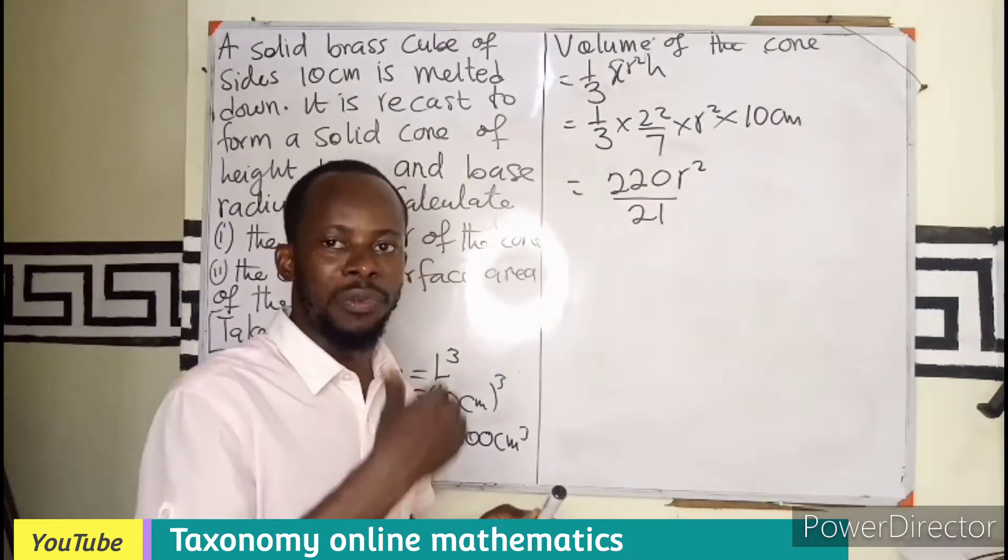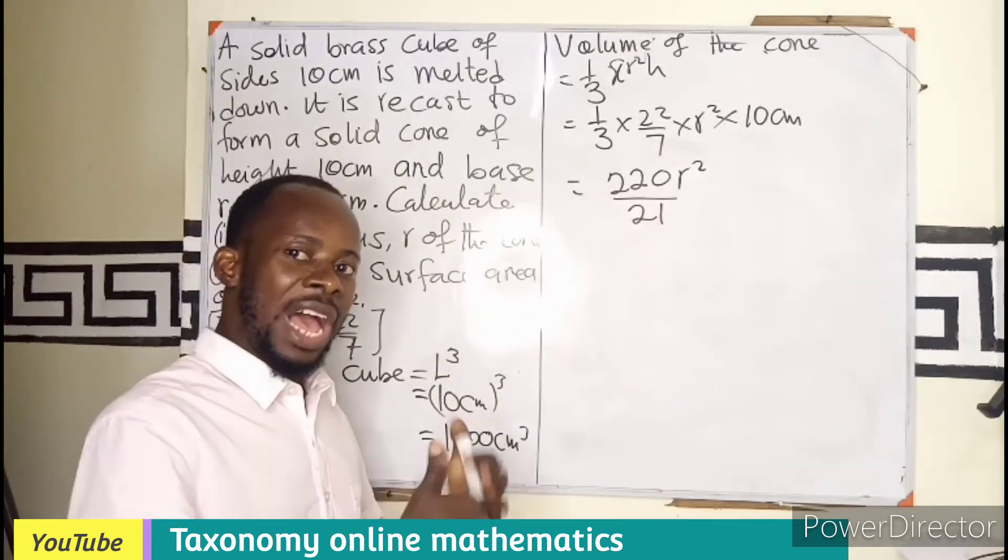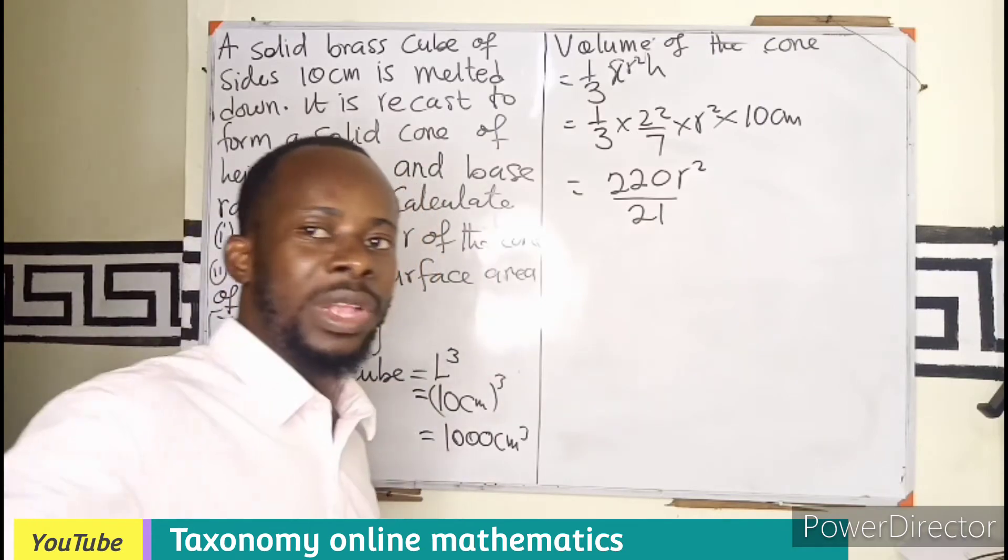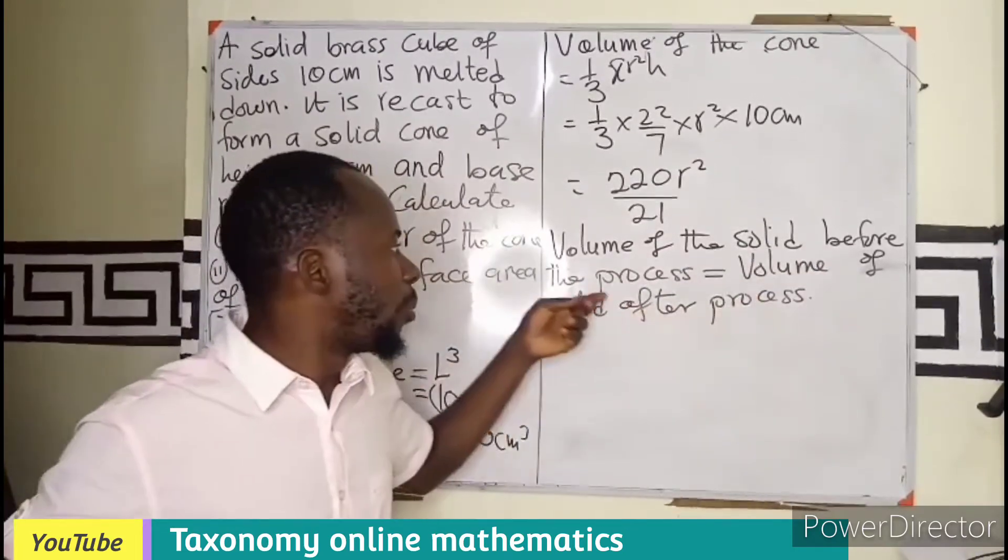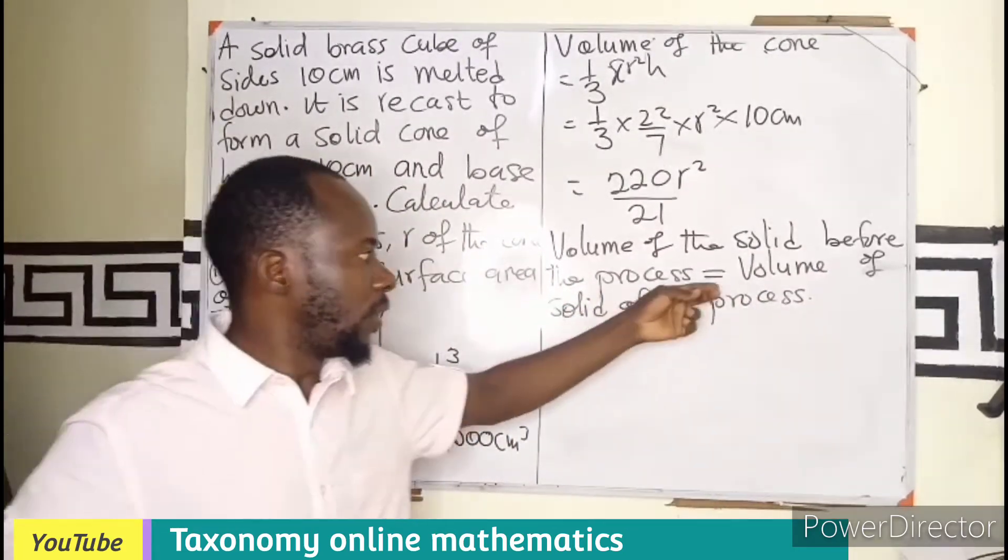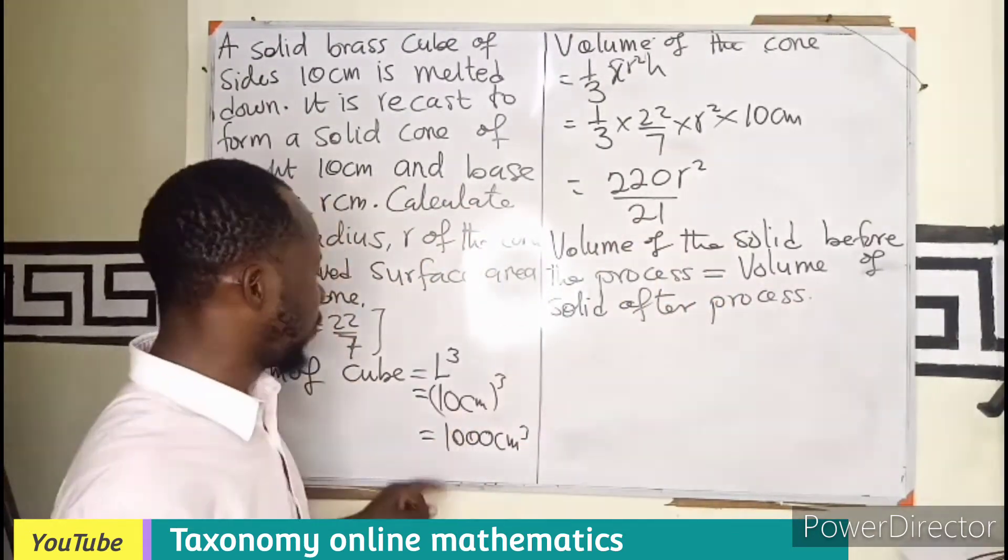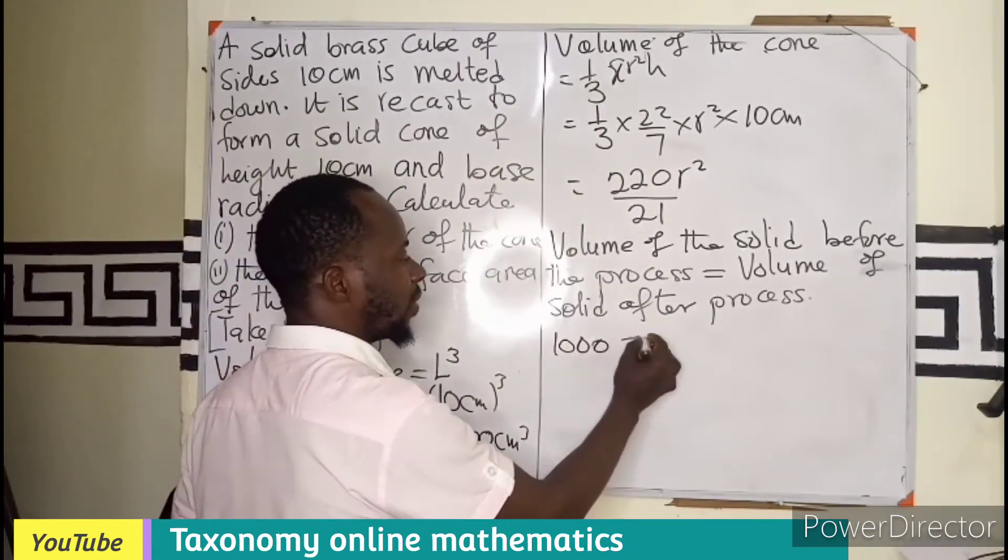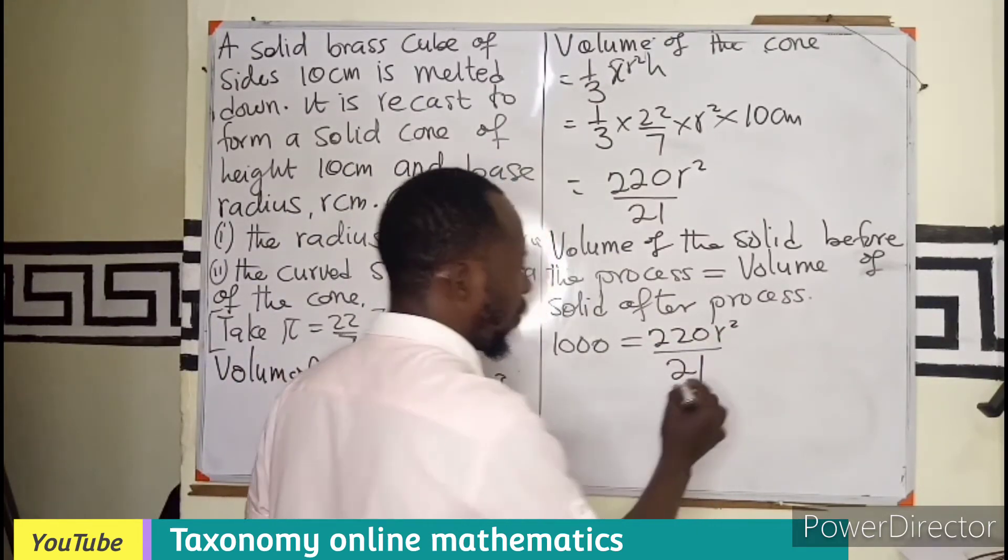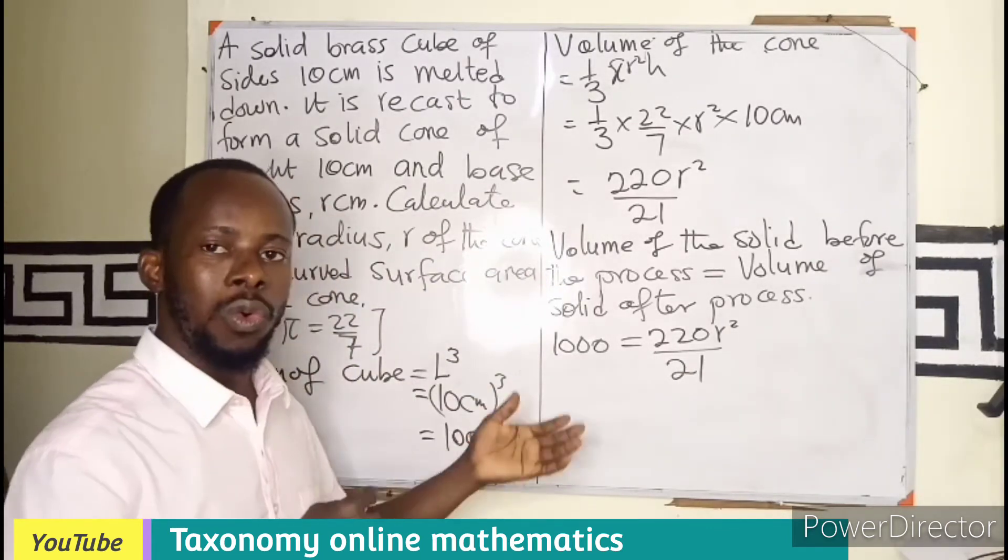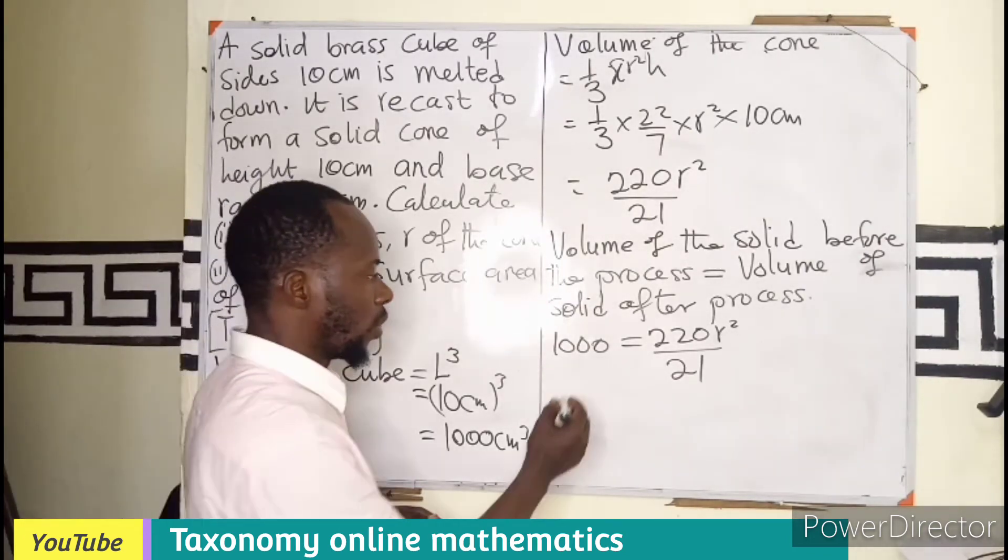Now we can know that the volume before and volume after are the same. Before is cube, after is a cone. So like I said earlier on, the volume of the solid before the process, the cube, is equal to the volume of the solid after the process, that is the cone. That simply means that the first volume we had, which is 1,000, is the same as 220 r square over 21.